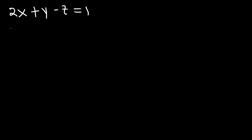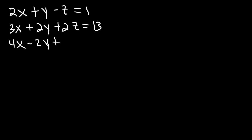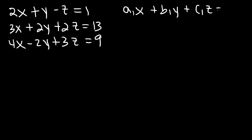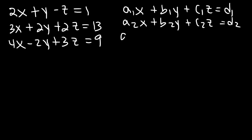So let's say we have 2x plus y minus z, and that's equal to 1. And also 3x plus 2y plus 2z, and that's going to be equal to 13. And then 4x minus 2y plus 3z, let's say that's equal to 9. Now, this equation is in this form: a1x plus b1y plus c1z equals d1, then a2x plus b2y plus c2z equals d2, and a3x plus b3y plus c3z equals d3.